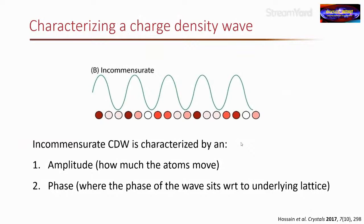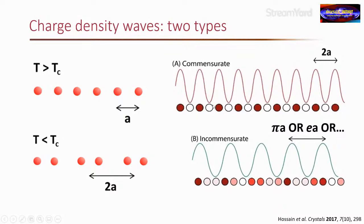The reason for distinguishing commensurate and incommensurate is phase behavior. In the commensurate case, the phase of the charge density wave is pinned to the lattice. For an incommensurate CDW, the wave can sit anywhere in the lattice — the phase is not pinned — so the phase can be anywhere from 0 to 2π.